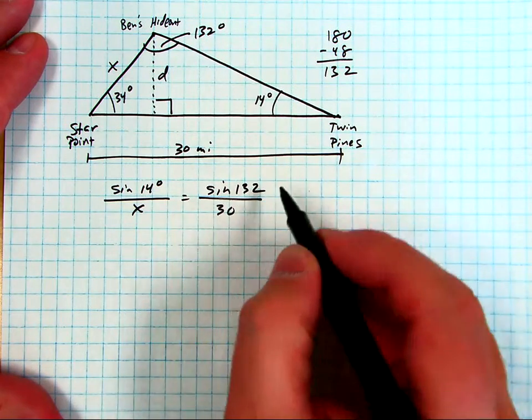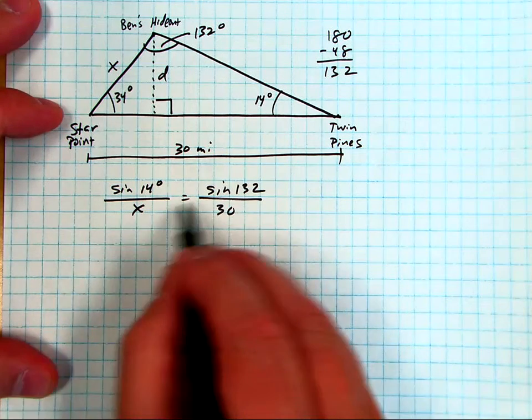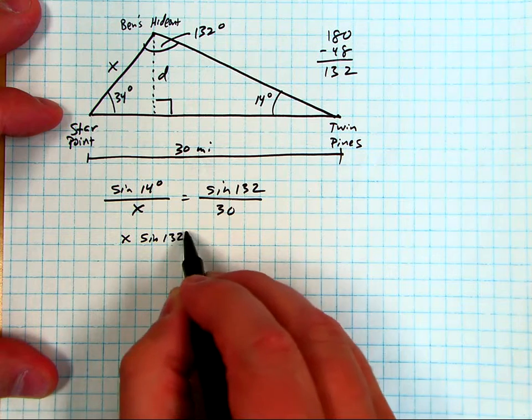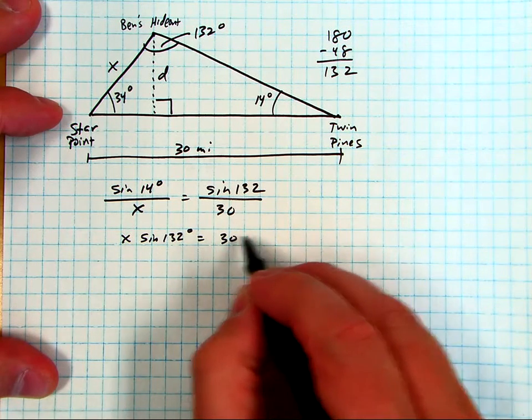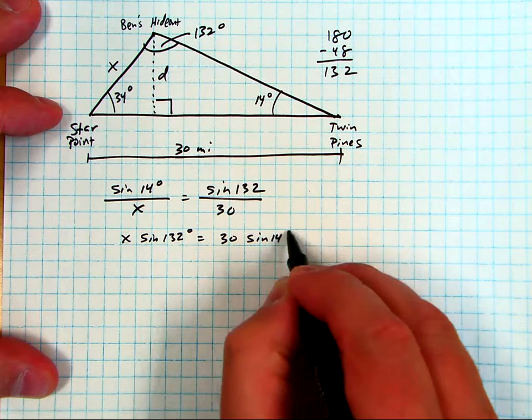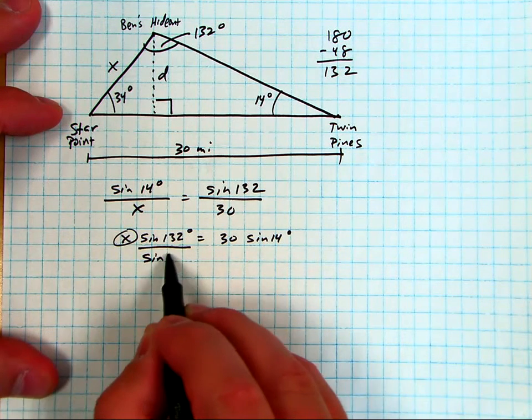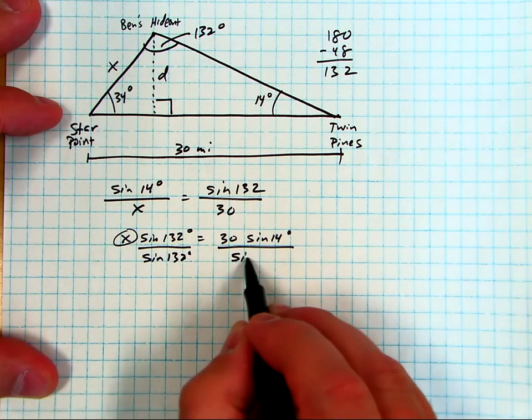So that's what I'm going to put right there. Now let's cross multiply and solve for x, so we get x sine of 132 degrees equals sine of 14 times 30, so I'll write it as 30 sine of 14 degrees. So I'm trying to solve for x, so divide both sides by this number, the sine of 132 is just a number.